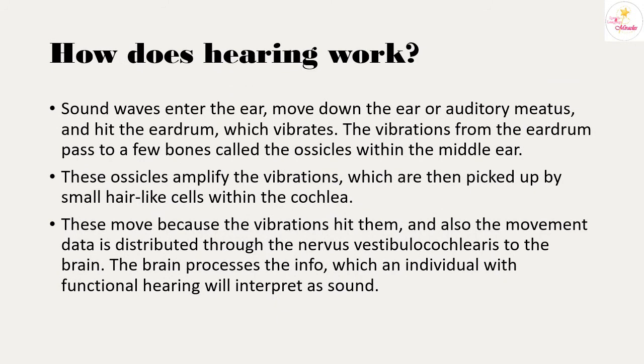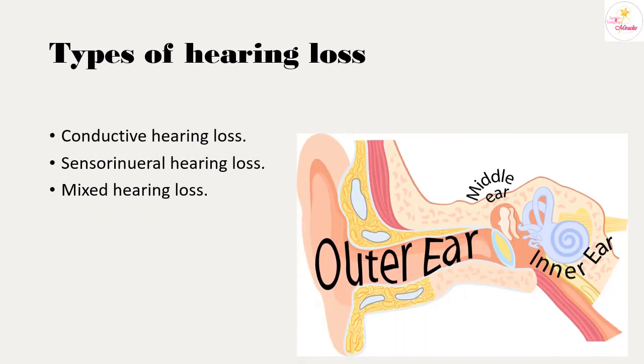Sound waves enter the air, move down the ear canal, and hit the eardrum which vibrates. The vibrations from the eardrum pass to small bones called the ossicles within the middle ear. These ossicles amplify the vibrations, which are then picked up by small hair-like cells within the cochlea. The movement data is sent through the vestibulocochlear nerve to the brain, which processes the information that a person with functional hearing interprets as sound.